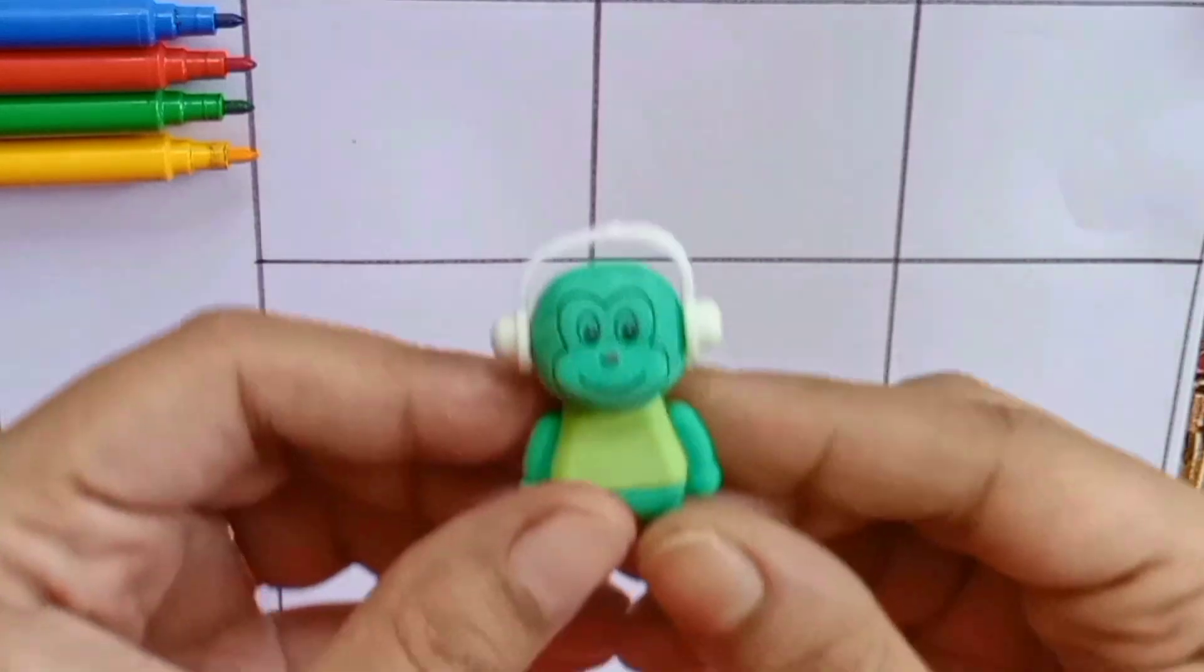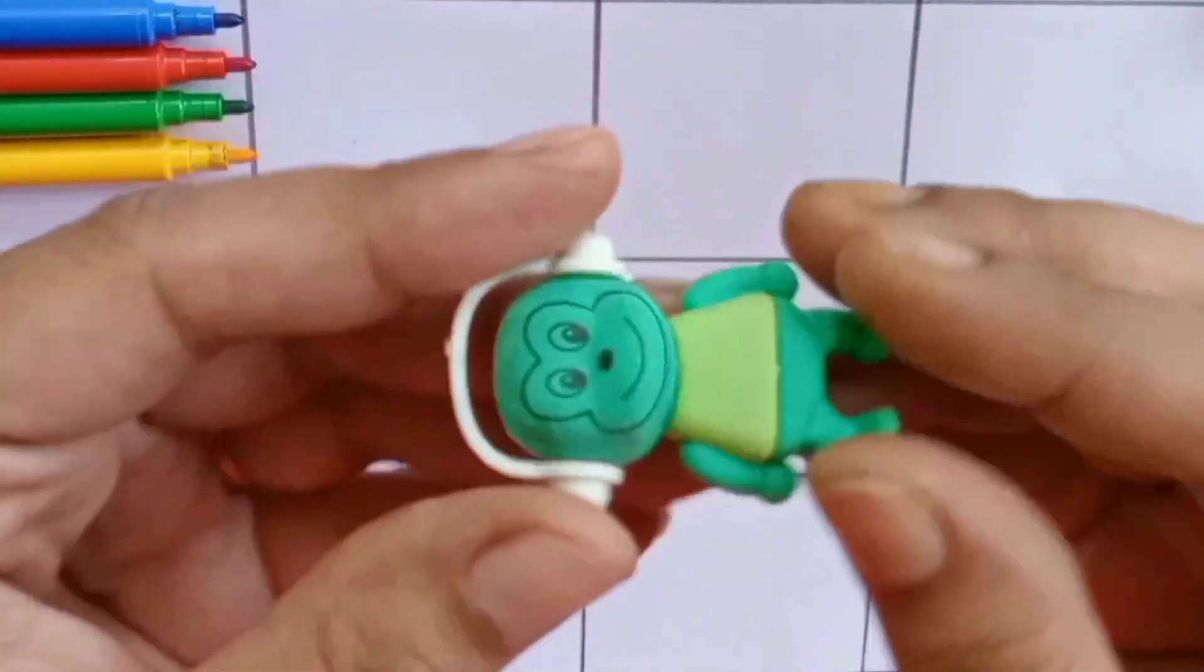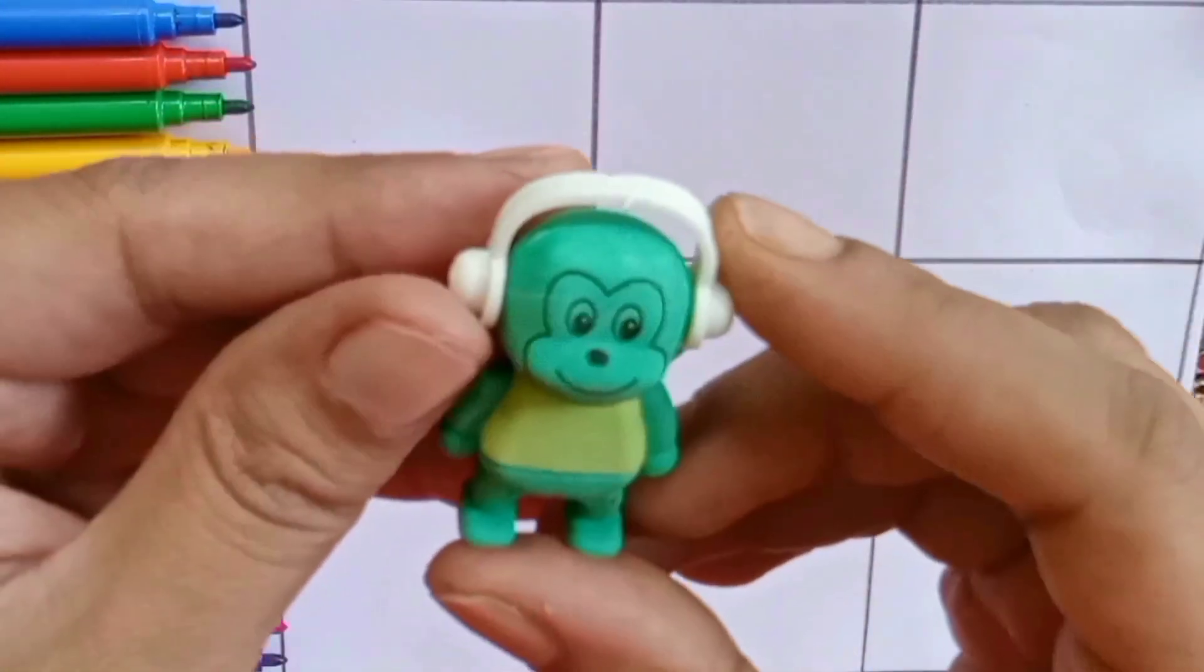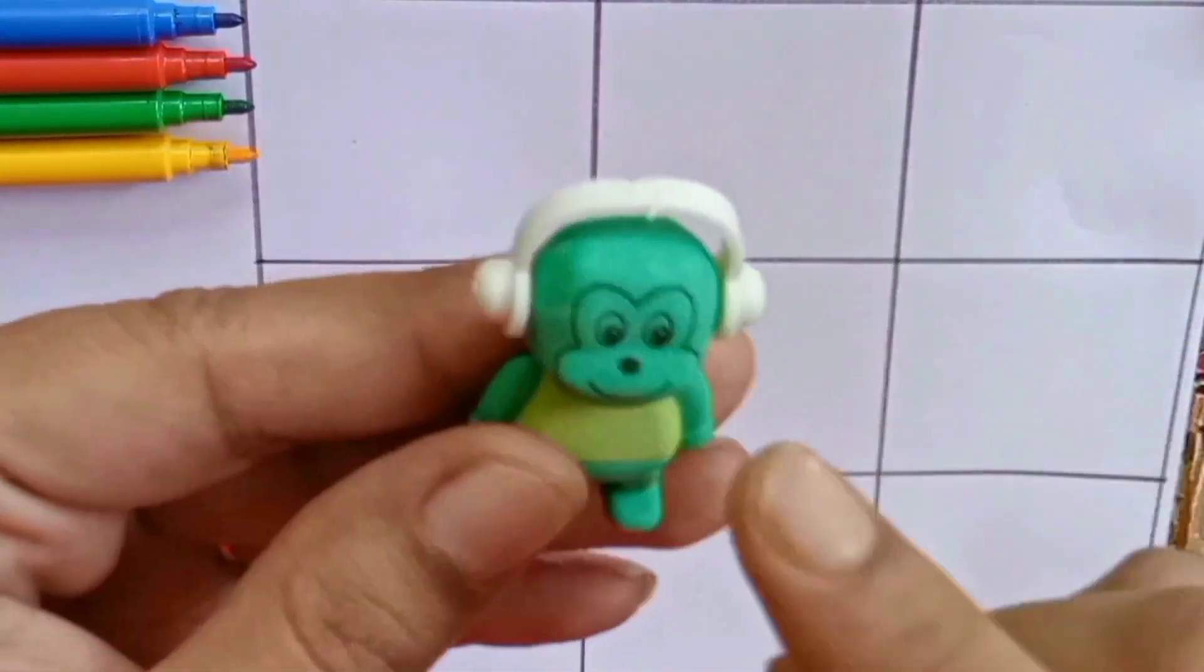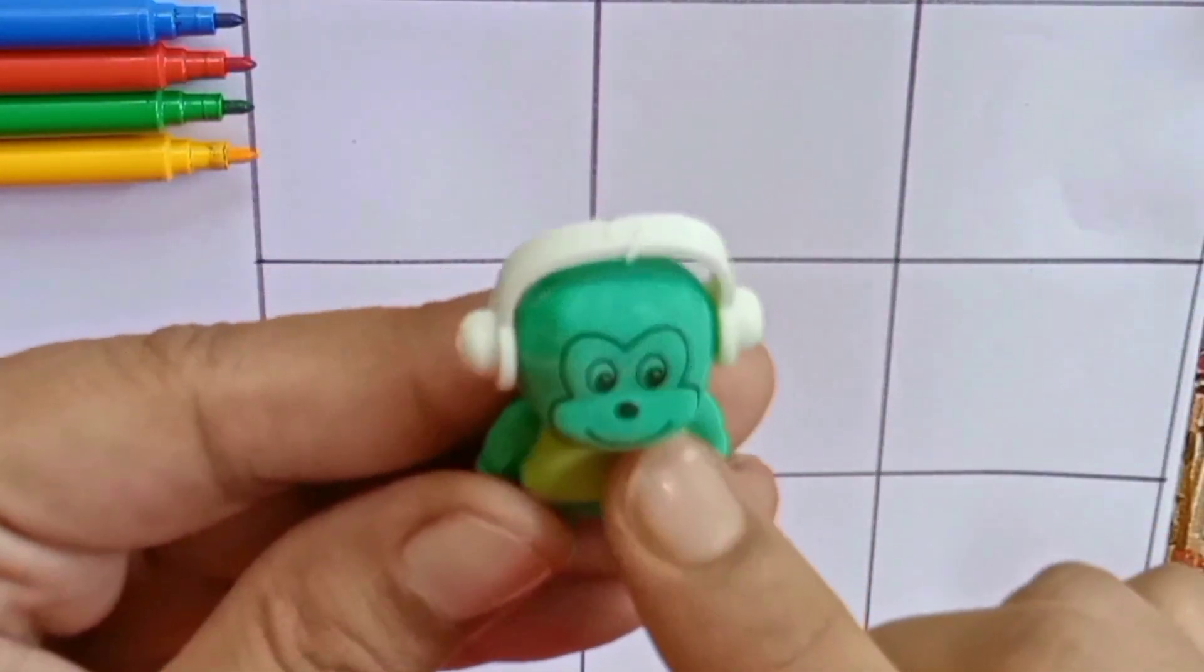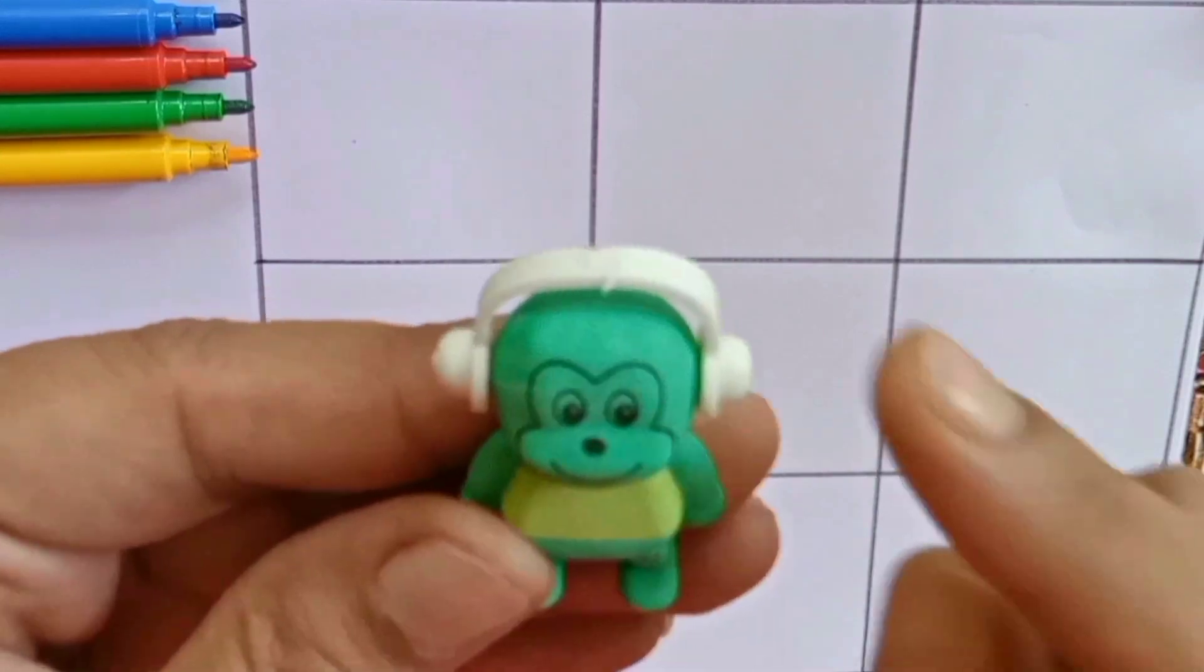This is so cute! You can also separate the parts. Light green color, green color, white color. He is listening to songs.